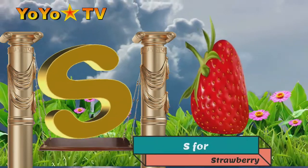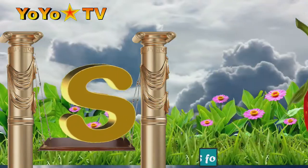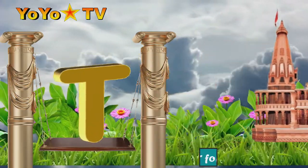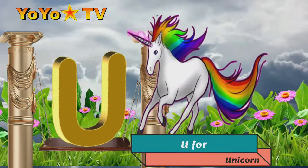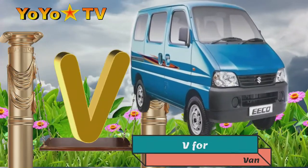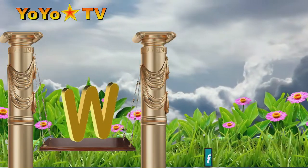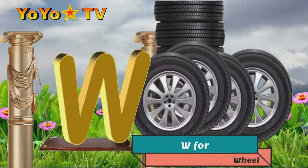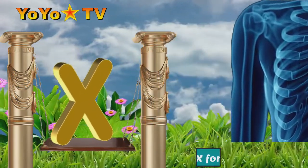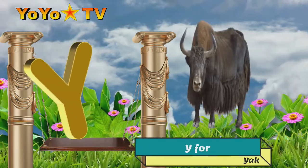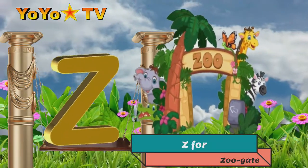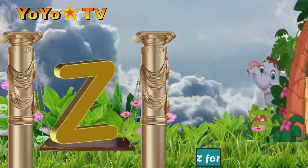S for sun, T for tiger, U for umbrella, V for van, W for whale, X for xylophone, Y for yak, Z for zebra.